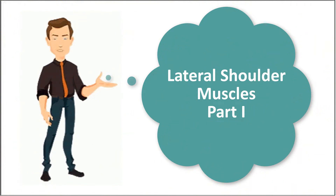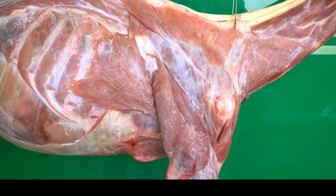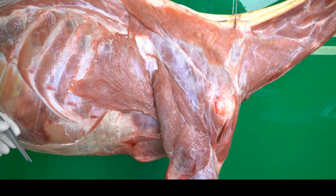Hello everyone, this is Ahmad, and in our anatomy tutorial today we are going to be talking about the muscles of the shoulder joint. The muscles of the shoulder joint take their origin from the scapula and end on the humerus.